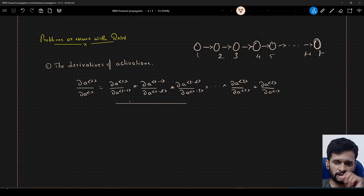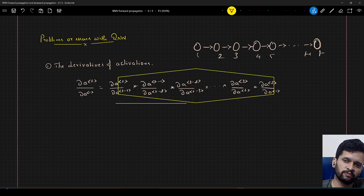So, in order to calculate the derivative of activation at time step t with respect to activation time step 1, if we apply the chain rule, we will arrive at some equation like this, right. We have already seen this in our previous video.